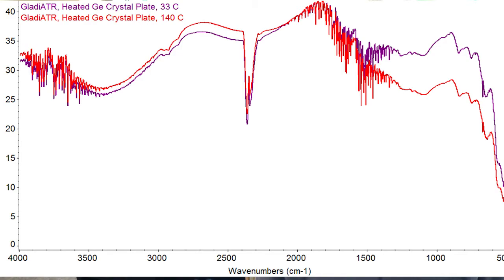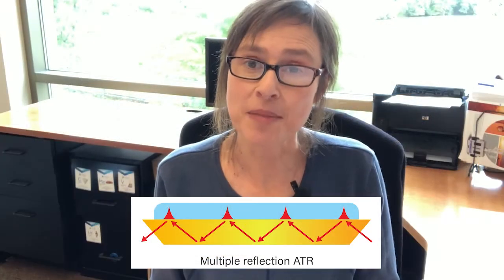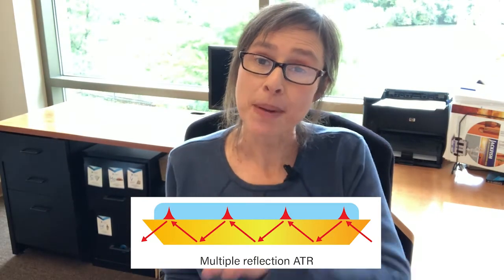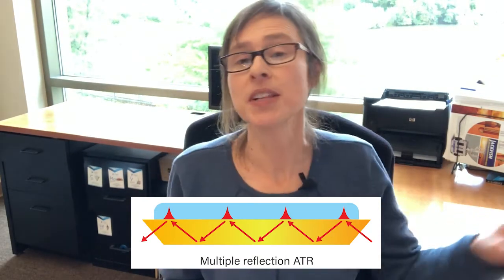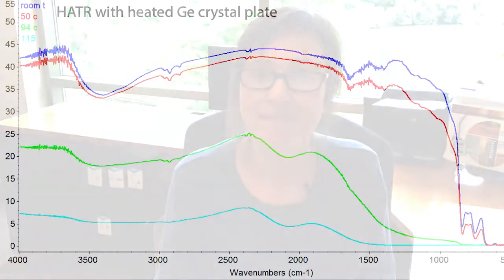We have minimal drop-off in energy throughput. Now let's contrast that with the HATR, which is a multiple reflection ATR with a long crystal — 80 millimeters. With that beam bouncing down that 80 millimeter long crystal, it's quite a long beam path. Let's see what happens when we heat it up. Here I have data collected from room temperature